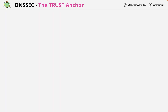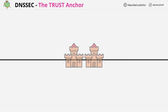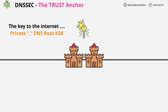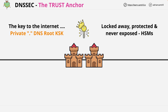Locked away within two secure locations, one in California and another in Virginia, is what amounts to the keys of the internet — the private DNS root key signing key, known as a KSK. It's impossible to overstate how important this set of keys is to the internet. They rarely change and the trust in them is hard-coded into all DNSSEC clients. With them, you can define what's valid on the DNSSEC root zone, and because of this, every child top-level domain, every child zone inside those, and every DNS record. These are locked away, protected, and never exposed, and they use redundant hardware security modules, also redundant across physical locations.